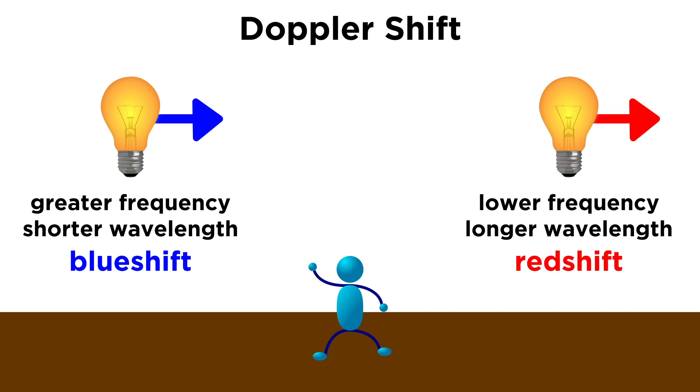If it is moving away from us, the frequency will decrease, and the wavelength will therefore increase, towards the red end of the visible spectrum. We call this a red shift.